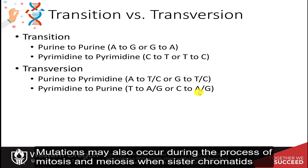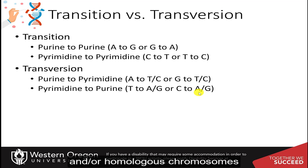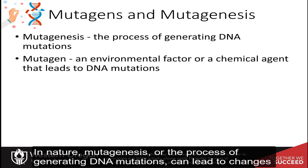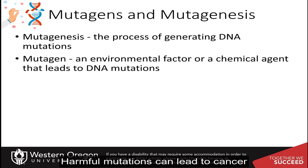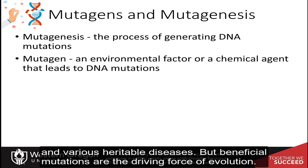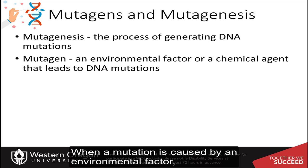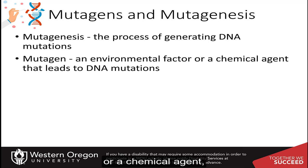Mutations may also occur during the process of mitosis and meiosis when sister chromatids and/or homologous chromosomes are being separated from one another. In nature, mutagenesis, or the process of generating DNA mutations, can lead to changes that are harmful, beneficial, or have no effect. Harmful mutations can lead to cancer and various heritable diseases, but beneficial mutations are the driving force of evolution. When a mutation is caused by an environmental factor or a chemical agent, the agent is called a mutagen.